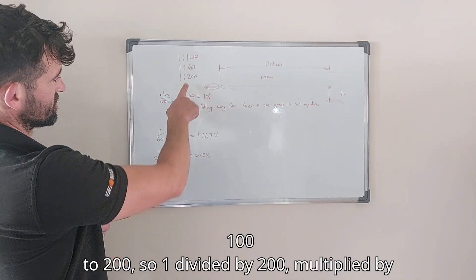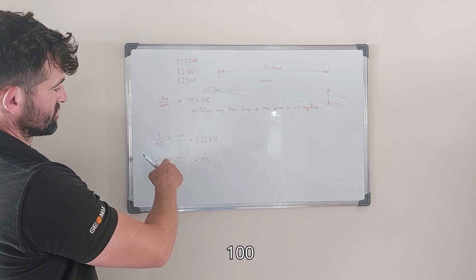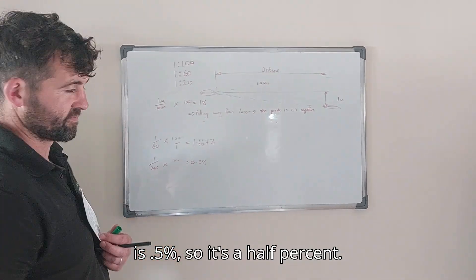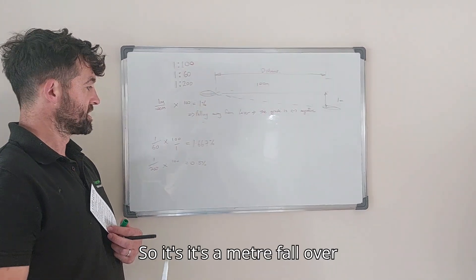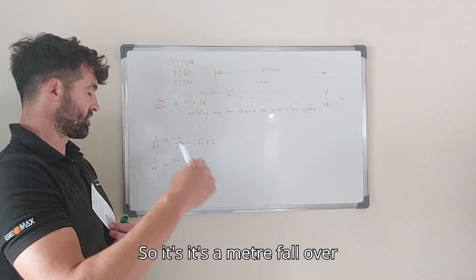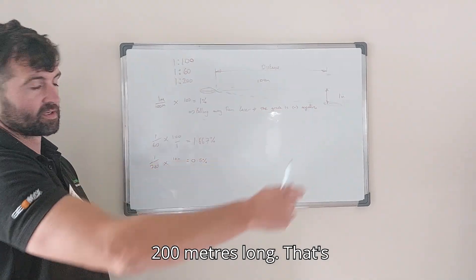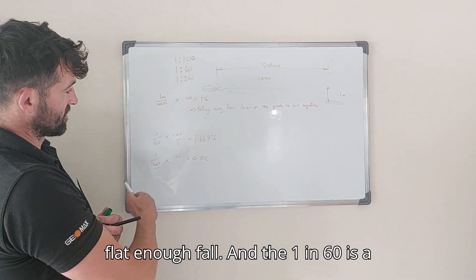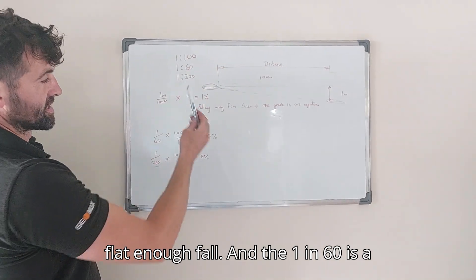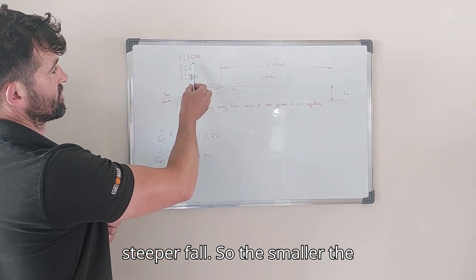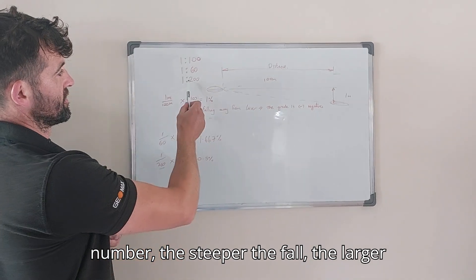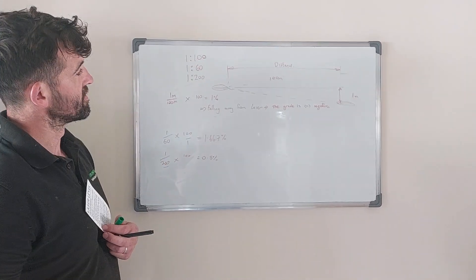That's a common number, 1 is to 200. 1 divided by 200, multiplied by 100 is 0.5%, so it's a half percent. It's a meter fall over 200 meters long. That's a flatter fall and the 1 in 60 is a steeper fall. So the smaller the number, the steeper the fall. The larger the number, the flatter the fall.